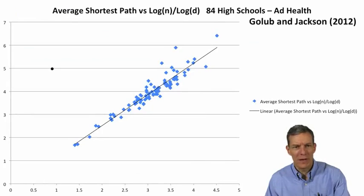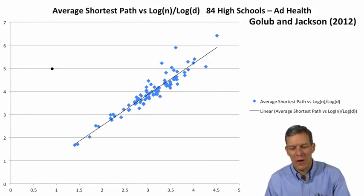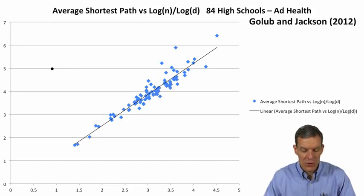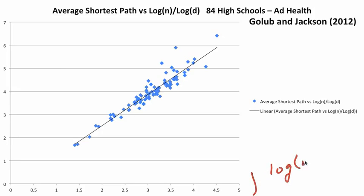And so let's have a quick peek at some data. So this is the average shortest path, and it's plotted for the giant component versus log n over log d. And this is from 84 high schools for which there's fairly complete network data. And this is from work I did with Ben Golub. And when you look at this graph, so what do we have on the x-axis? This is the log n. So look at the number of people in the high school divided by log of the average number of friends that they had in the network. And then here's the actual average shortest path.